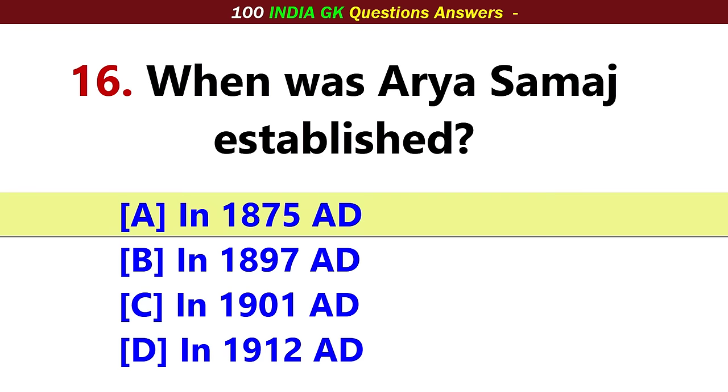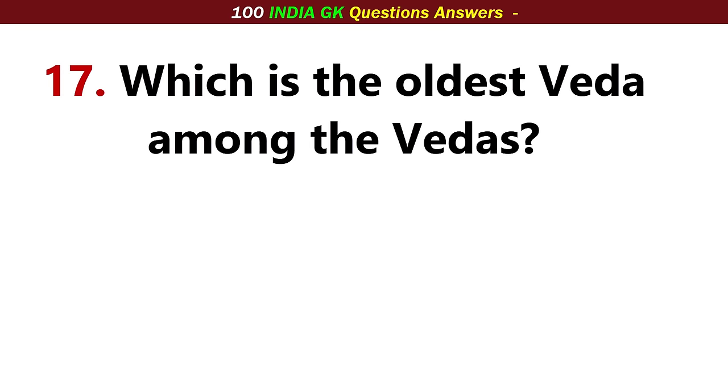When was Arya Samaj established? Option A: In 1875.